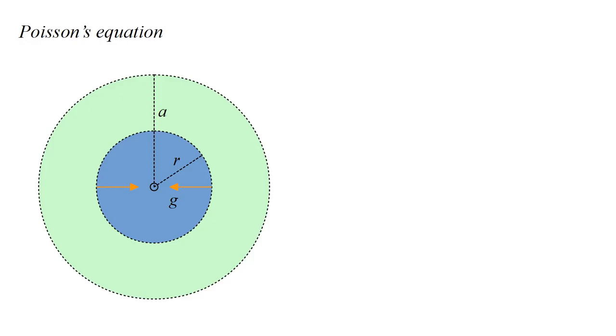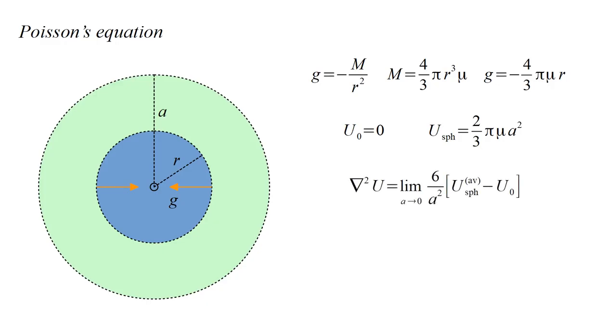When we are a distance r from the center, our unit mass will feel attraction to the mass inside a sphere of that radius. The resulting gravitational field is minus m over r-squared, where m is the volume four-thirds pi r-cubed times the mass density mu. This gives a gravitational field that grows linearly with r. If we take the potential at the center to be zero, we find that the potential on the sphere is two-thirds pi mu a-squared. Putting this into our definition of the Laplacian, we get Poisson's equation.